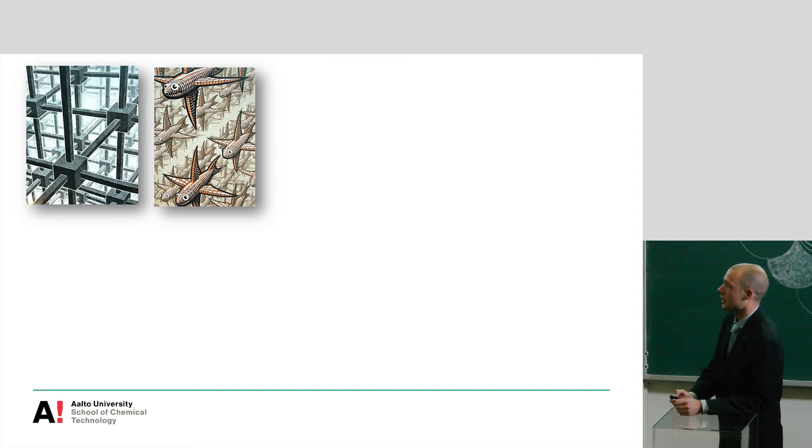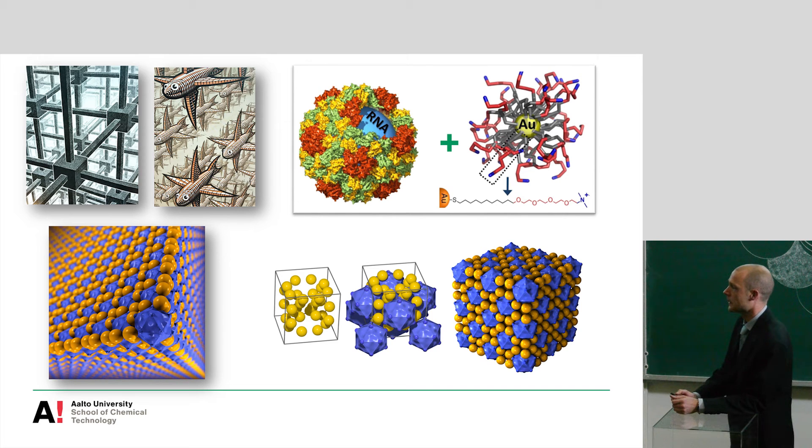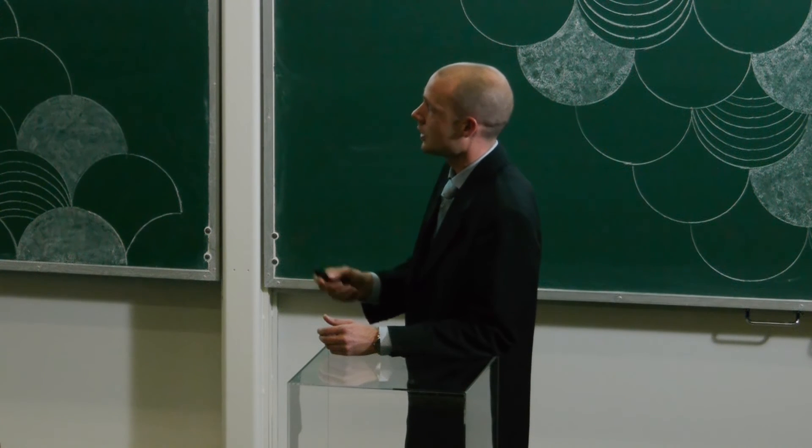So let's start with the first one. So here we have taken two different building blocks. A virus particle, which is an extremely monodispersed building block. And then a synthetic nanoparticle and combine these. And if one controls the conditions extremely carefully, then crystalline material can be obtained. And now this particular crystal structure that is forming is a result of the extremely monodispersed structure of the biomolecule and then of course the chemical conditions where this reaction takes place. And then we get a crystalline structure.